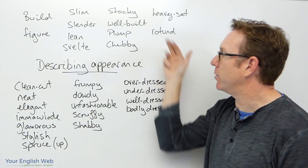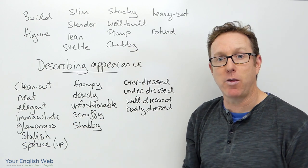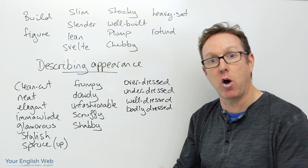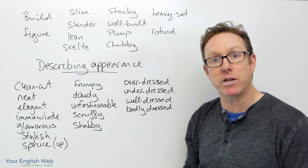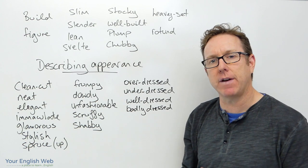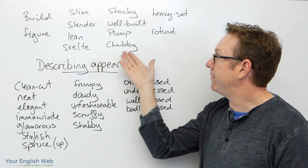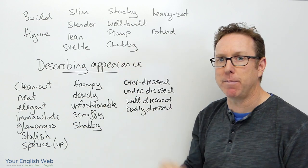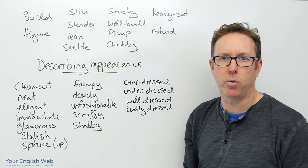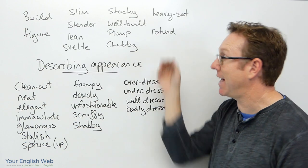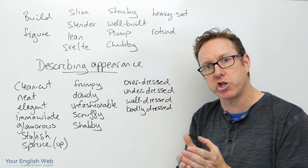Plump, chubby, and rotund are similar as well. Plump is another way of saying a little bit overweight, a little bit fat. Chubby as well — a little bit chubby. It's not as negative as calling somebody fat or obese, but if you say somebody's chubby or plump it means they've got a few extra kilos they're carrying around. Rotund refers to a round shape.